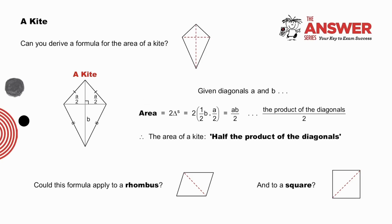The area of the kite is, however, twice that. The 2's cancel, and we are left with this portion: a times b over 2. The product of the diagonals divided by 2. Or, we can say the area of a kite is half the product of the diagonals. Pause to repeat this formula a number of times. Could this formula apply to a rhombus and to a square? Yes, in both cases, because a rhombus and a square are just special kites.